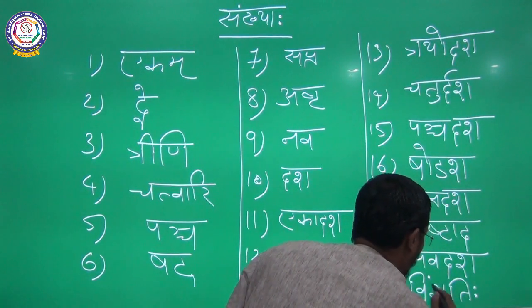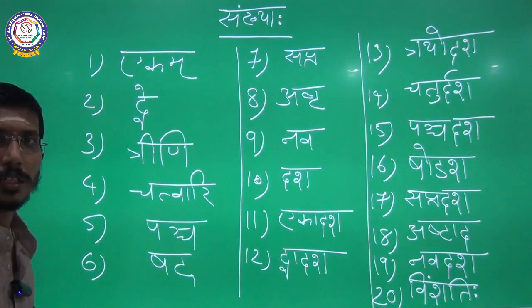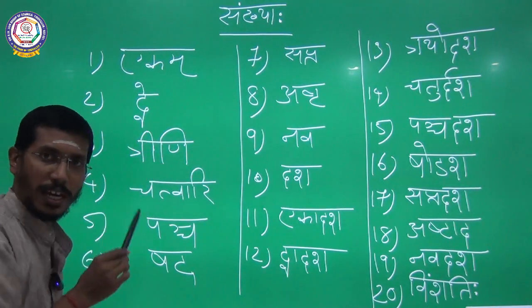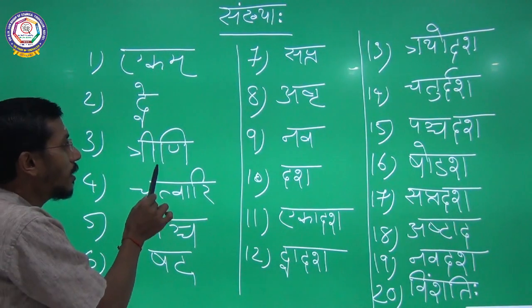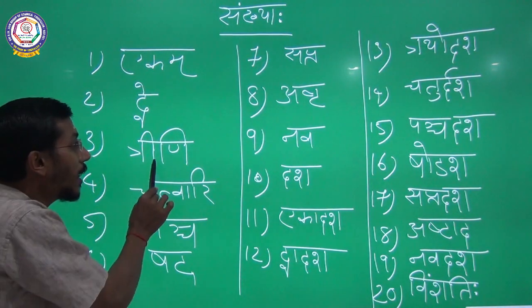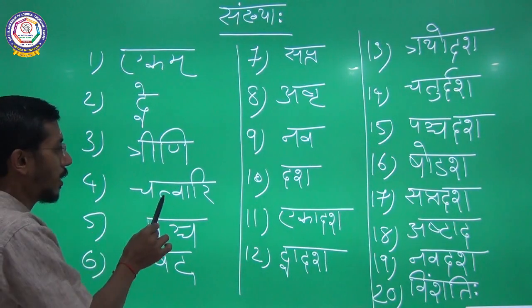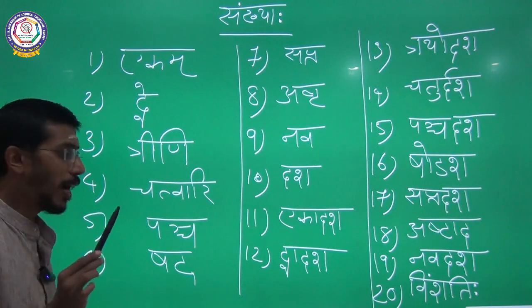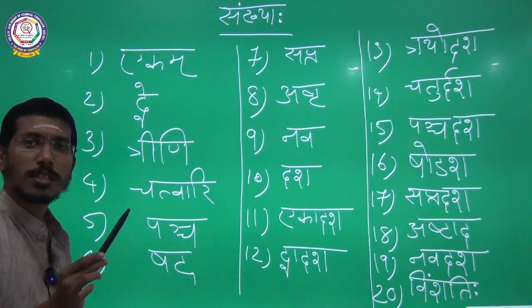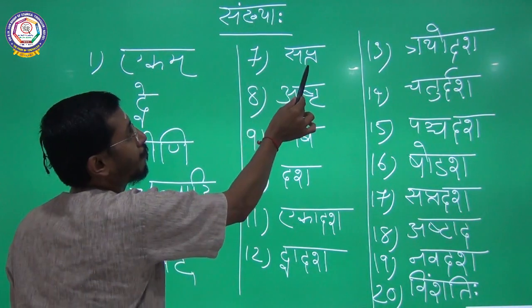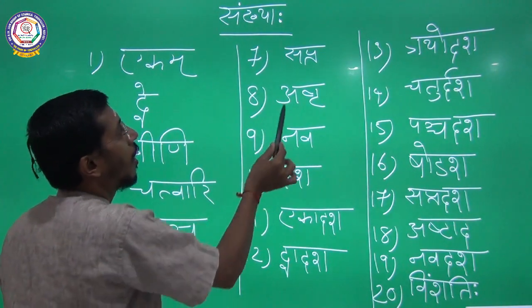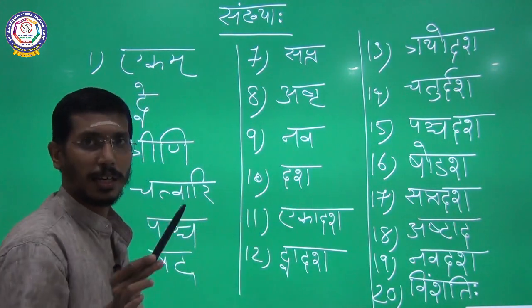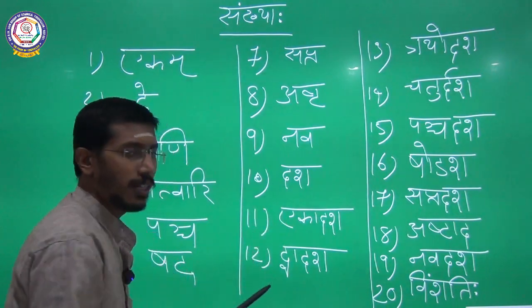Vimshatihi. Now listen: Ekam — 1, Dwe — 2, Trini — 3, Chathwari — 4, Panch — 5, Shat — 6, Sapta — 7, Ashta — 8, Nav — 9, Dash — 10.